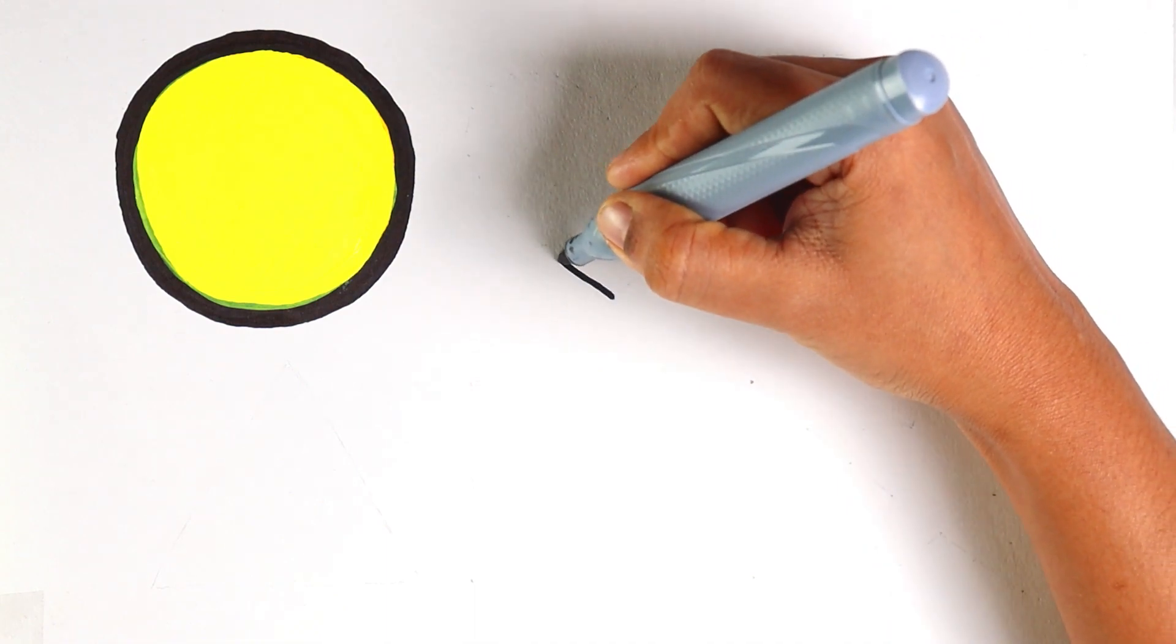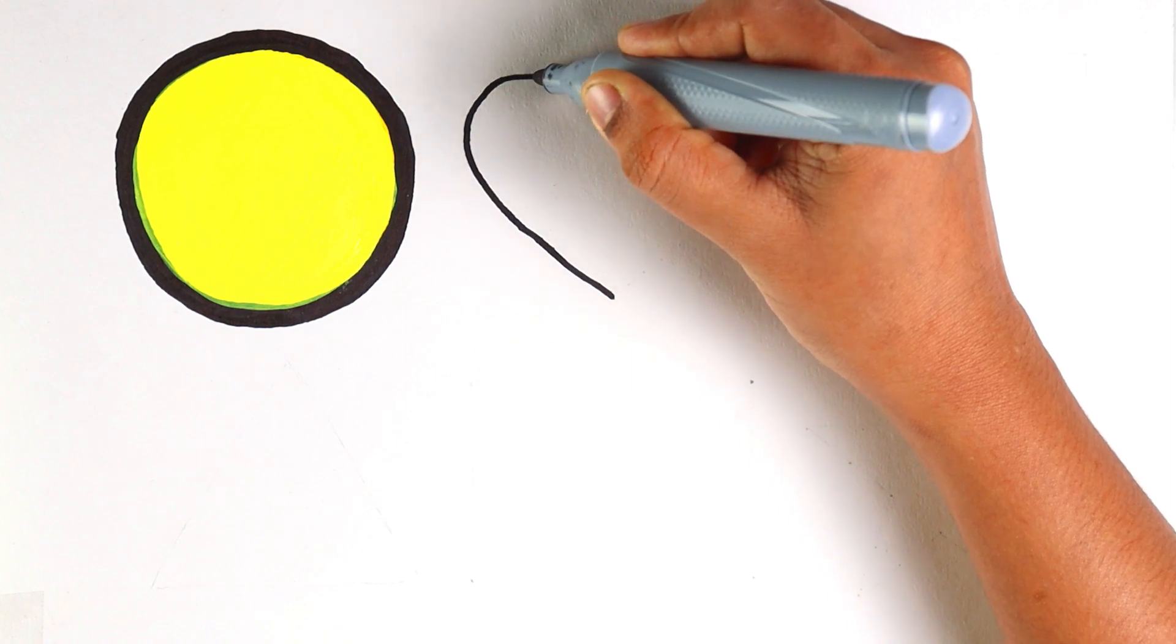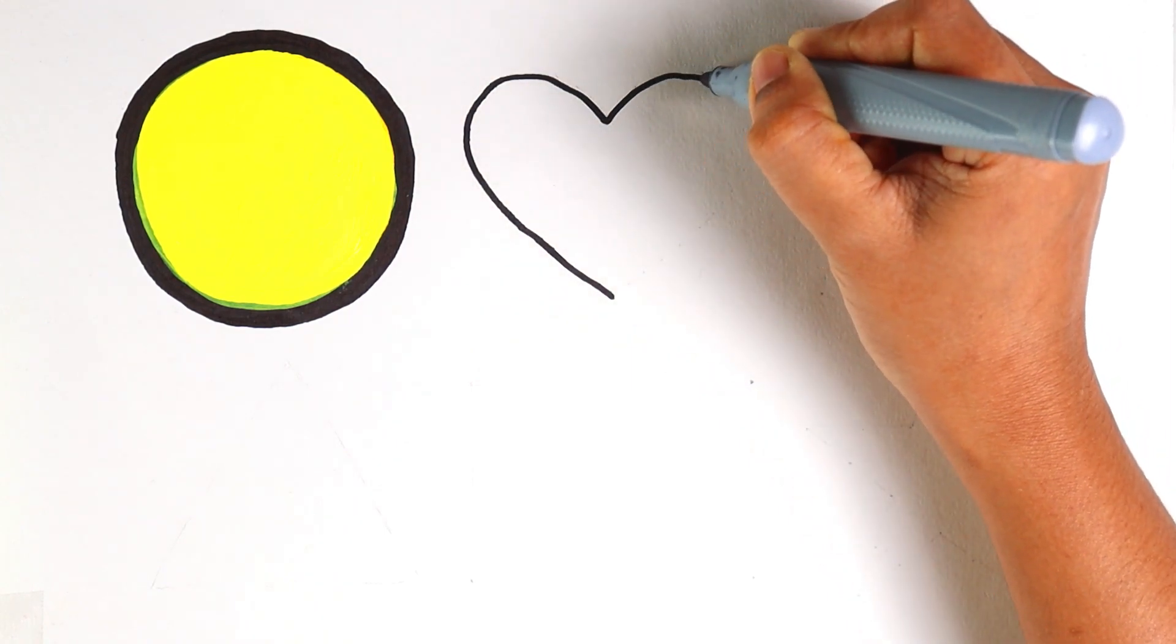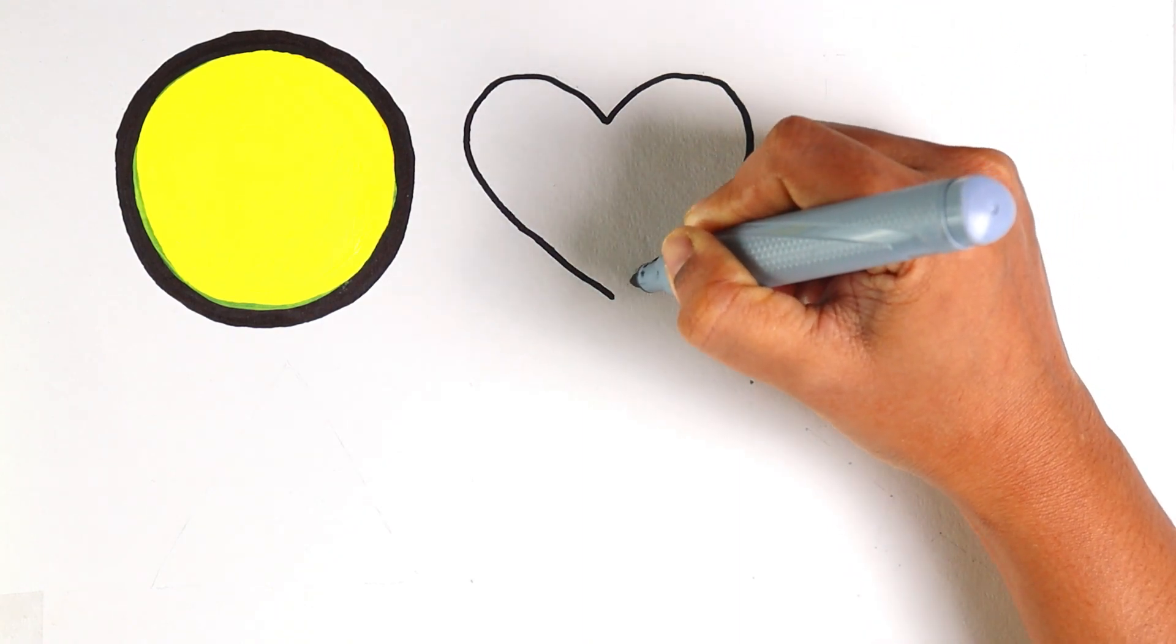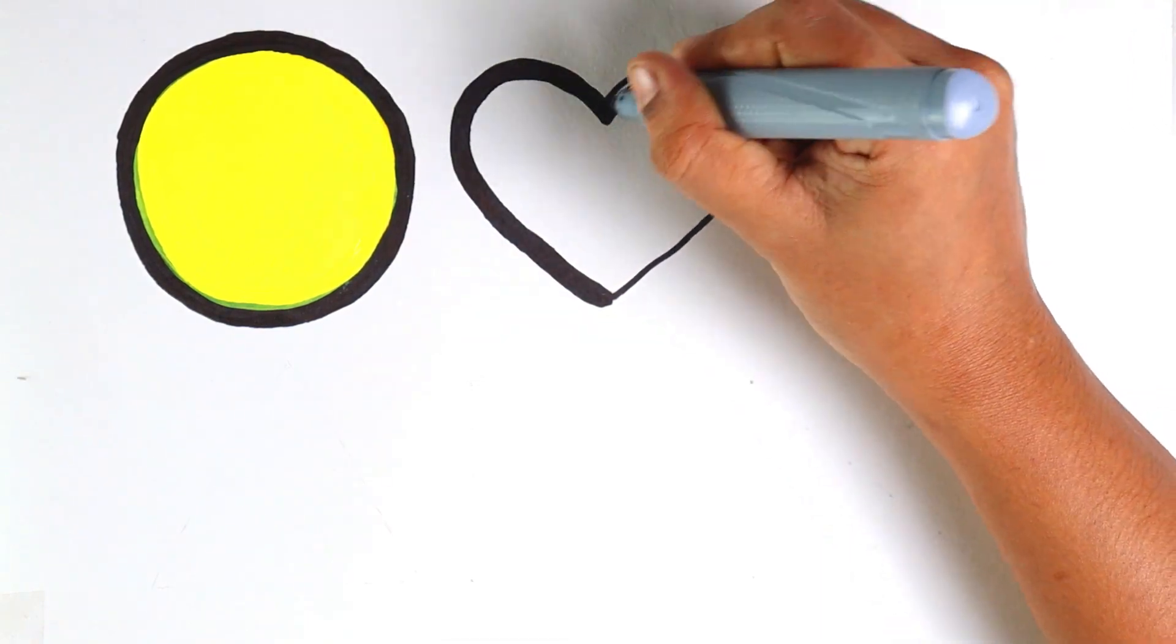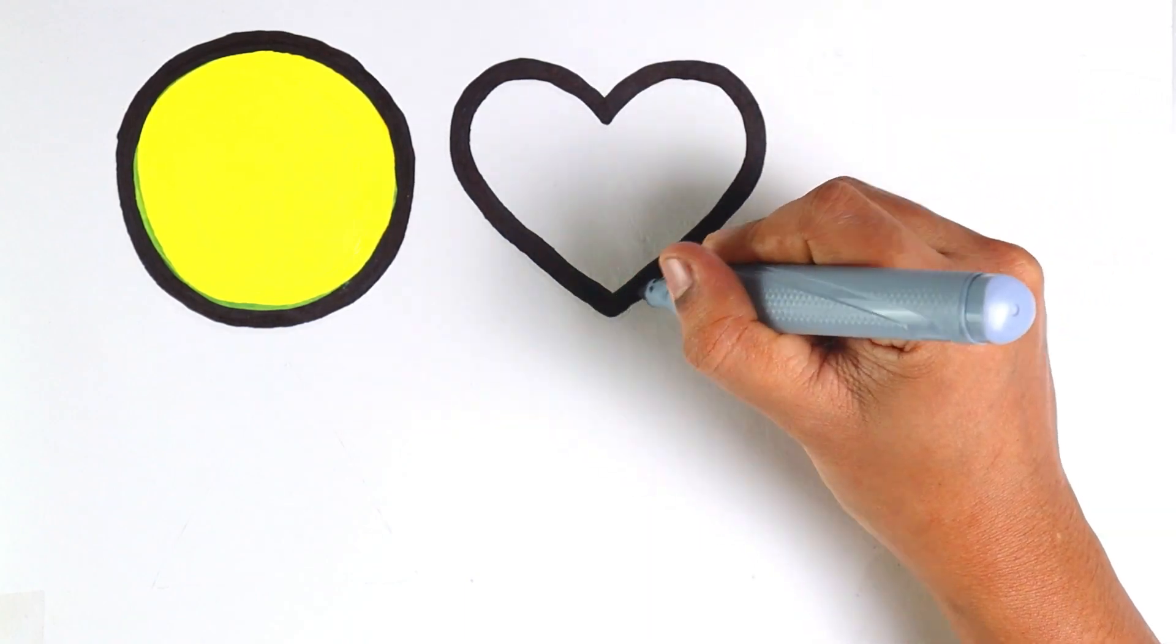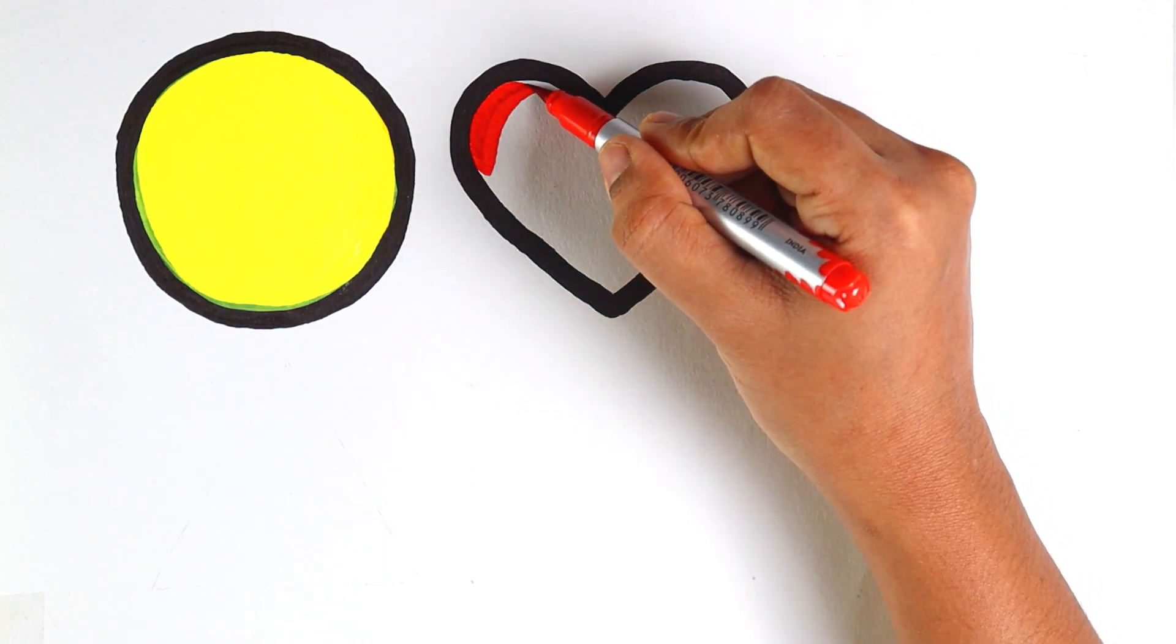Now let's go for the next shape. I hope you all can guess it right. It's a heart shape. Let's color the heart with red color.